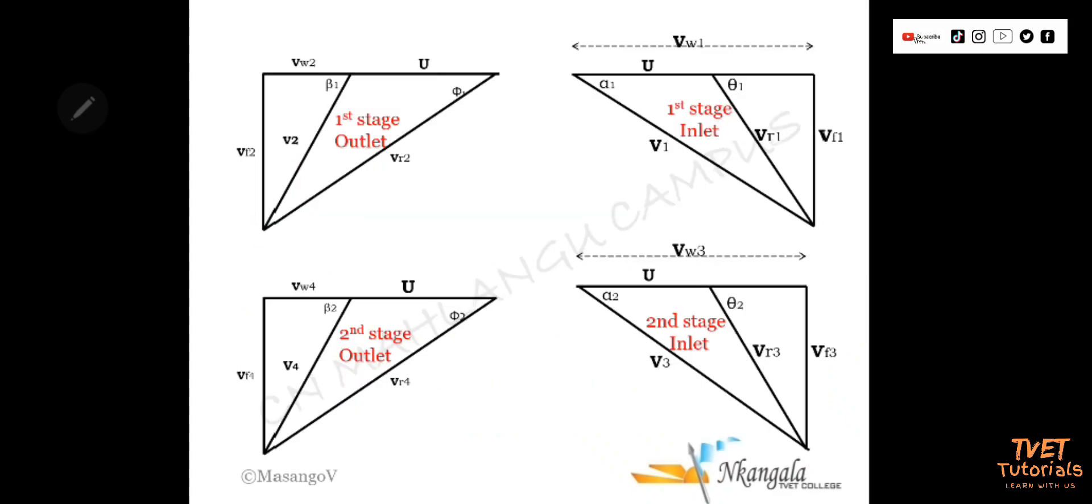So let's check which information we are given and how we can use this information to be able to draw a velocity diagram and determine where to start. At the inlet of the first stage, we are given information to calculate u, so take u as given. We are given the angle of the nozzle alpha 1 and the velocity leaving the nozzle which is V1. At the outlet of the first stage, we have u and phi 1, which is the outlet blade angle.